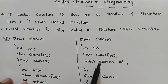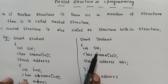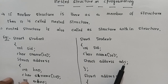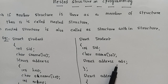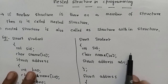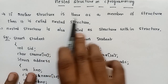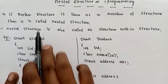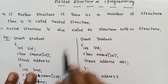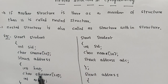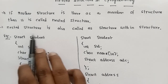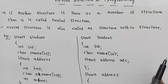If you use a structure as a member of another structure, it is called a nested structure. A nested structure is also called a structure within a structure.